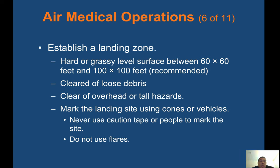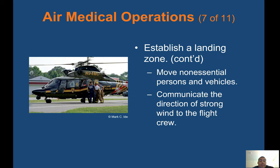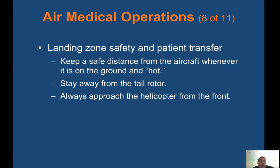To establish a landing zone, use a hard or grassy level surface between 60x60 feet minimum and 100x100 feet recommended. Clear loose debris, overhead or tall hazards, and keep clear of power lines. Mark the landing site using cones or vehicles — never use caution tape or people, and do not use flares. Move non-essential persons and vehicles, and communicate wind direction to the flight crew.